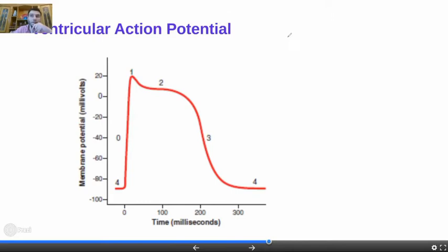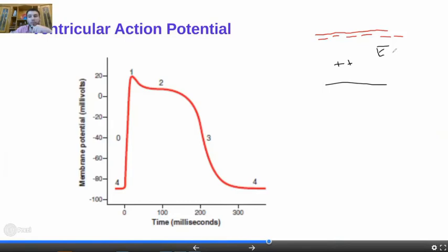The resting membrane potential is negative inside because fewer positive charges are present inside compared to outside. Positive ions are abundant in the extracellular fluid compared to intracellular fluid, and the most abundant positive cation in the ECF is the sodium ion.